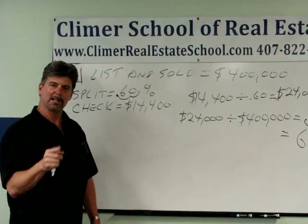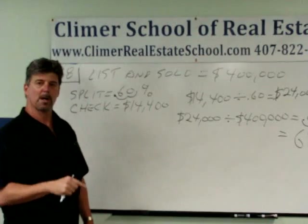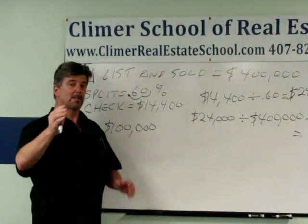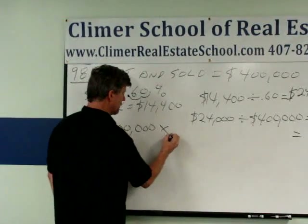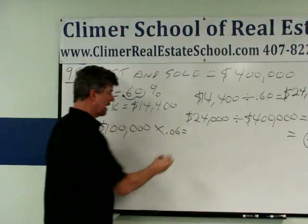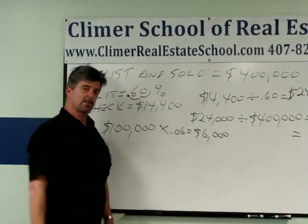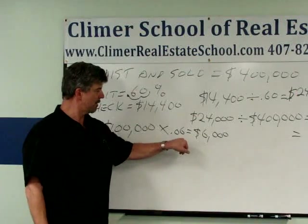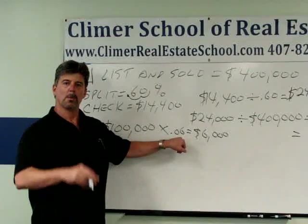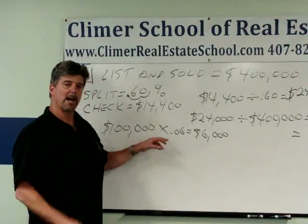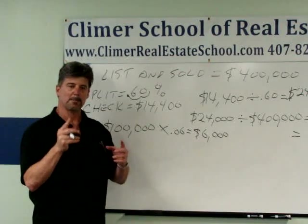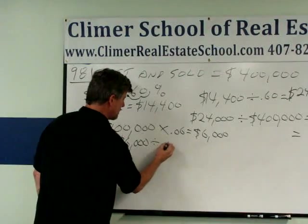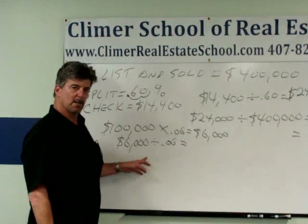I'll bet you know how to calculate your commission. Start with a $100,000 sales price — if the commission is 6%, you get $100,000 times 6% equals $6,000. What if the problem said your commission check was $6,000 and the commission rate was 6% — what was the total sales price? Multiply and divide are opposites, so you take that $6,000 and divide by the commission rate. You get $100,000.